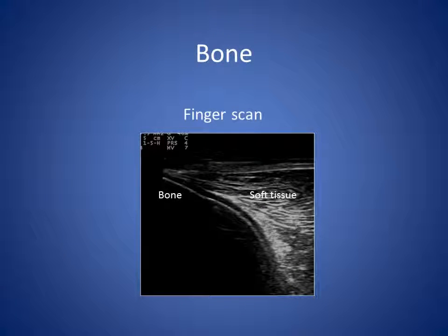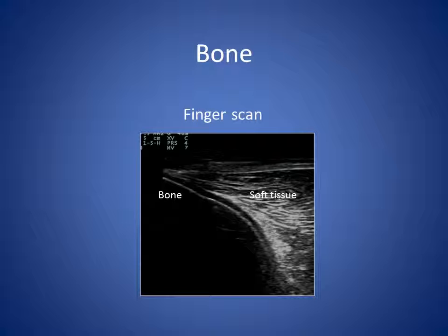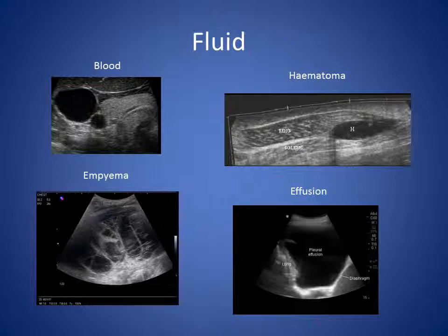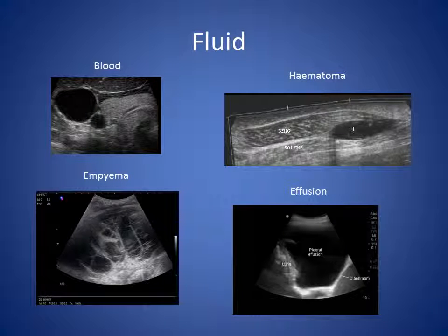Bone appears as a particularly bright line due to the dramatic difference in acoustic impedance between bone and soft tissue. High-frequency ultrasound does not penetrate bone effectively and therefore the screen is generally black deep to the bony cortex. Fluid — be it blood, effusion or cyst — is generally black, that is anechoic, although thicker fluids such as pus can be bright or dark.